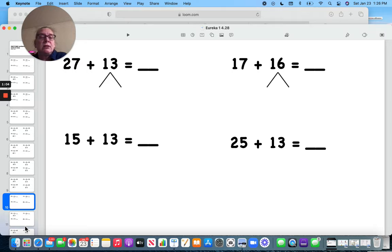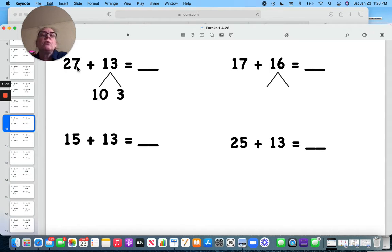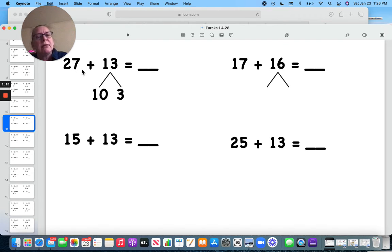Let's try this. Break it apart. 10 and 3. And then I'm going 27, 28, 29, 30 because 3 and 7 make a 10. Do you see why it's so important to know our make 10s? 27 and 3 makes 30. 30 plus 10 is 40.